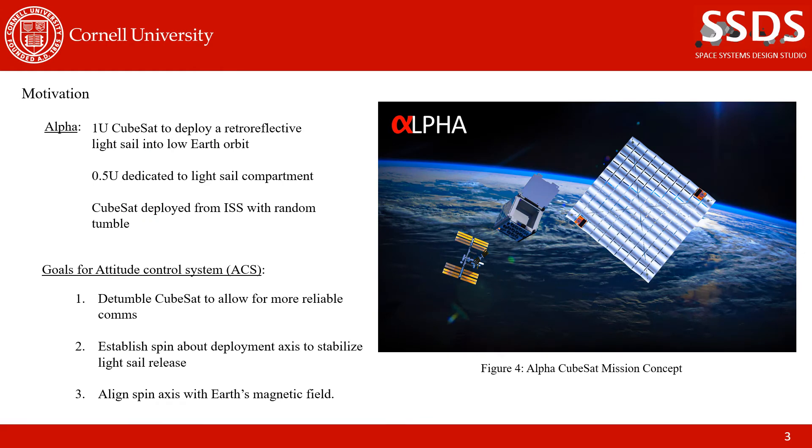The motivation for this work comes from a specific CubeSat called Alpha. It's a 1U CubeSat developed here at SSDS that deploys a retro-reflective light sail into low Earth orbit. As seen in the figure on the right, the CubeSat features a relatively large storage compartment for the light sail, which gets released when we send a command to open the door. Because of this payload, the available space on the CubeSat is even smaller. Half of the CubeSat is a compartment for the light sail, which only leaves 0.5U of space for everything else. This really eliminated the ability for us to include other attitude control devices such as reaction wheels. So with only magnetorquers, we need to de-tumble the CubeSat to allow for more reliable comms, establish a spin about the deployment axis to stabilize the light sail release, and align the spin axis with Earth's magnetic field.